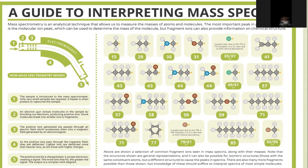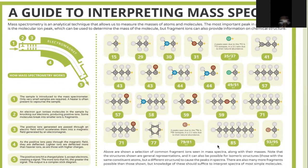Step five: ions hit the detector, creating a signal. The more ions that hit, the greater the signal. The output is a complex stick diagram. The diagram shows a selection of common fragment ions seen in mass spectra along with their masses. The structures shown are general representations, and isomeric structures — those with the same constituent atoms but different arrangement — can also cause peaks in the spectra.